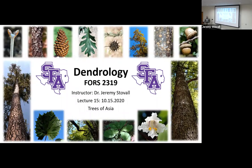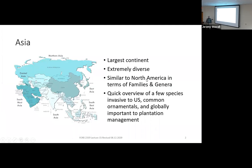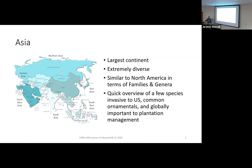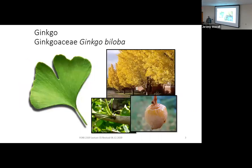This is our last lecture covering trees of the world, focusing on trees from Asia. This is going to be at a continental scale — a very large land area — and we'll get to about 16 or so species. Asia is the largest continent, extremely diverse, and much like Europe, it used to be joined with North America as part of one large continent, so you'll recognize almost all the families and genera we cover today.